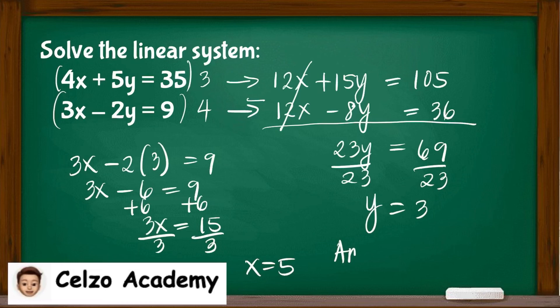This means that the system will have a solution at (5, 3), which means that the two lines will meet at the point (5, 3).